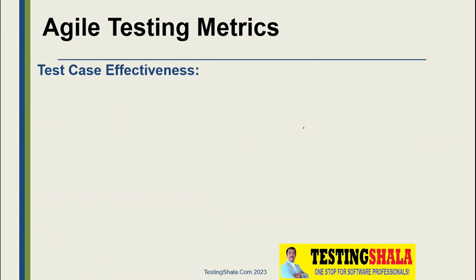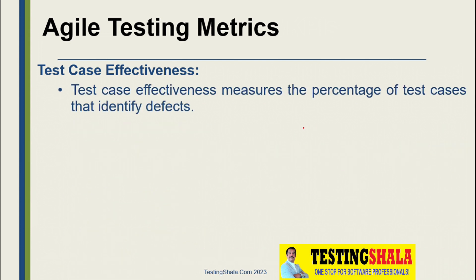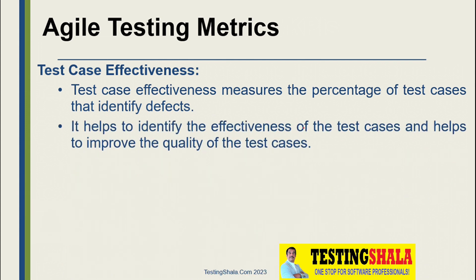The next metric is test case effectiveness, which measures the percentage of test cases that can identify defects. If we write a test case but it is not able to catch a defect, then that test case lacks effectiveness. This metric helps us improve the quality of the test cases we write so that we can create highly effective test cases that catch more defects.